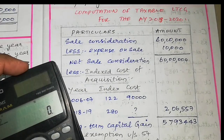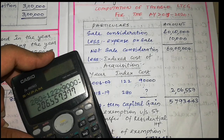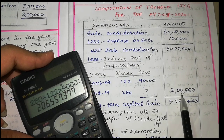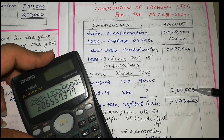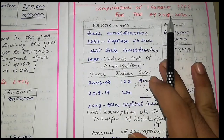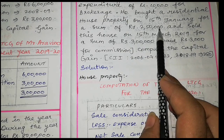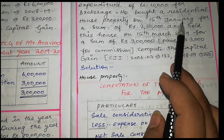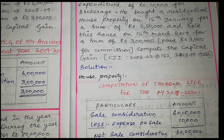So the indexed cost of acquisition is Rs. 2,06,557. After deducting from sale consideration, we will be getting a long-term capital gain. He then purchased a residential house property on 15th January 2019 for Rs. 2,50,000. If you sell a house property and reinvest in a house property, the exemption under Section 54 will be applied. As seen in the format video — exemption under Section 54 applies on transfer of residential house property.